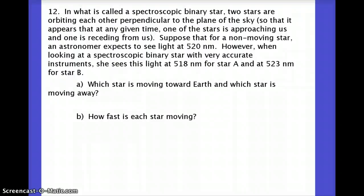Number 12 has a lot of words, but I basically took this from an astronomy book. So what we've got is two stars that are orbiting each other. And so one of the stars is coming towards us, one of them is going away from us. Now it says that for a non-moving star, non-moving suggests to me that I'm going to be dealing with lambda naught here. We expect to see the light at 520 nanometers. That will be our lambda naught because that's what we expect it when it is not moving. And we see the light at 518 for star A. And for star B, we see a wavelength of 523.